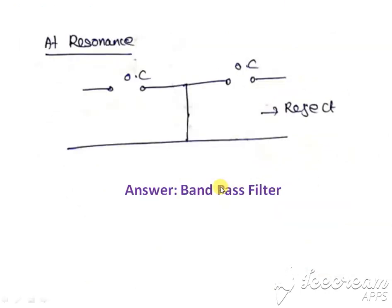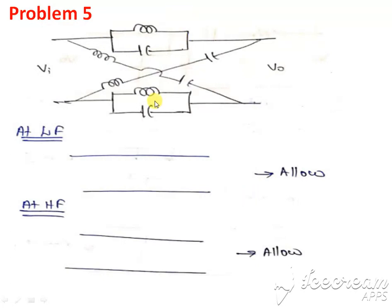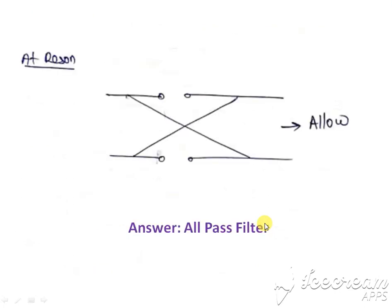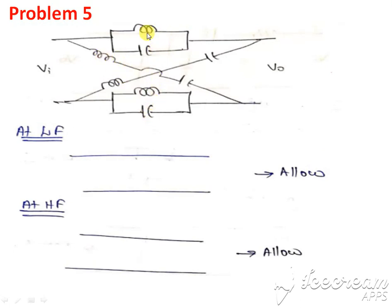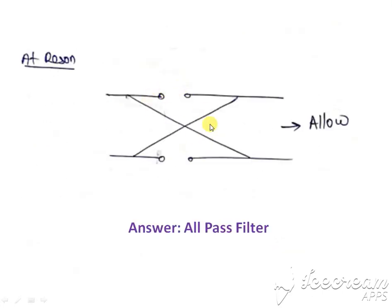This one is a band elimination filter. For the last case, we need to identify the filter type. At low frequency it is allowed because one of the elements is short-circuited, and the series combination is always open at both low and high frequency, so the input is passed to the output — allowed. At resonance, the parallel combinations are open-circuited and the series combinations are short-circuited, so the input is allowed to reach the output terminal — also allowed. Since all three cases are allowed, the circuit is confirmed to be an all pass filter.